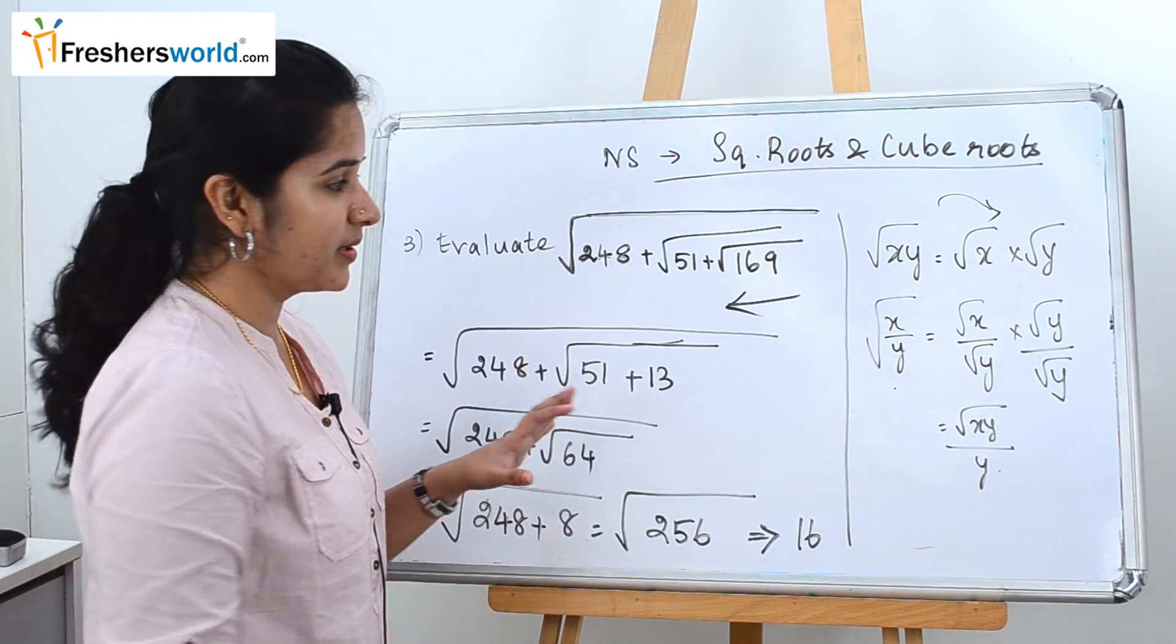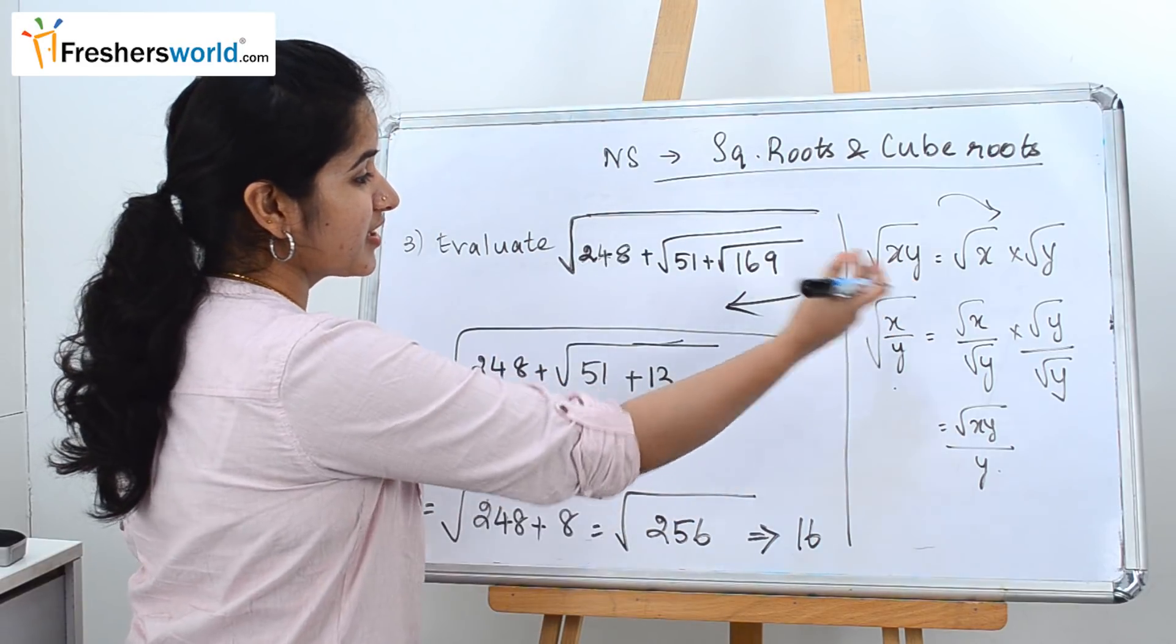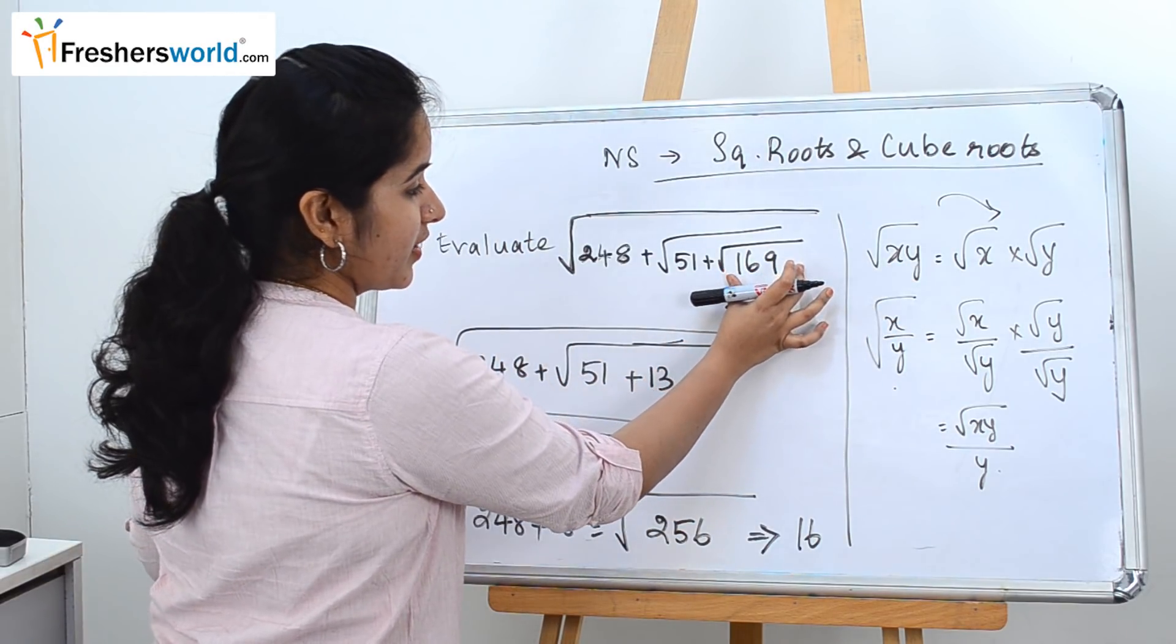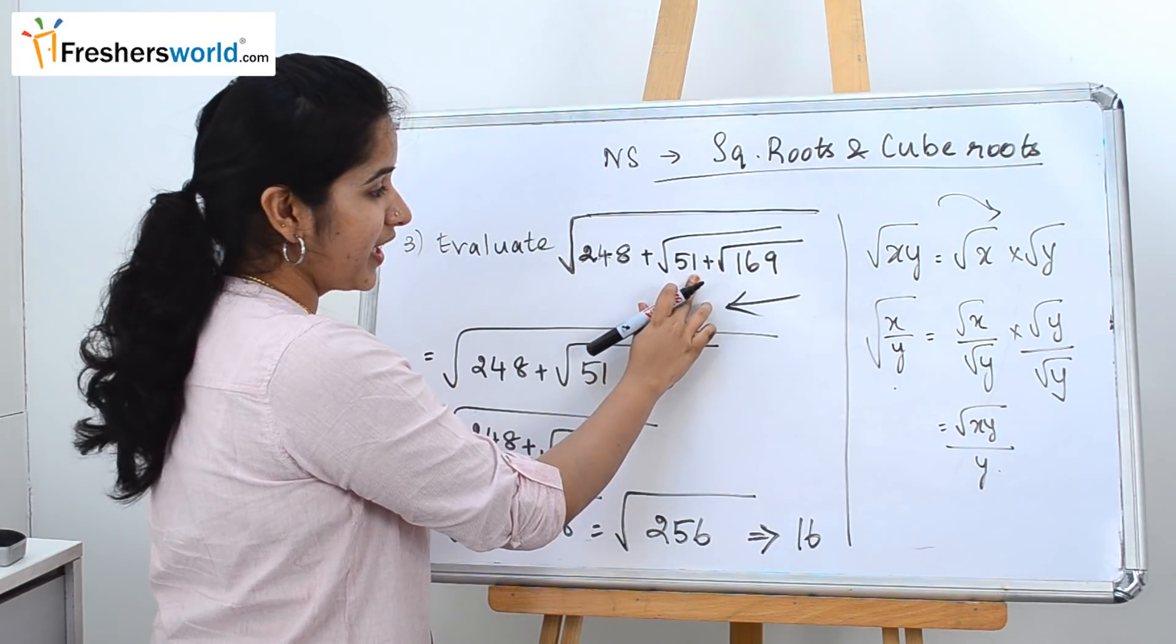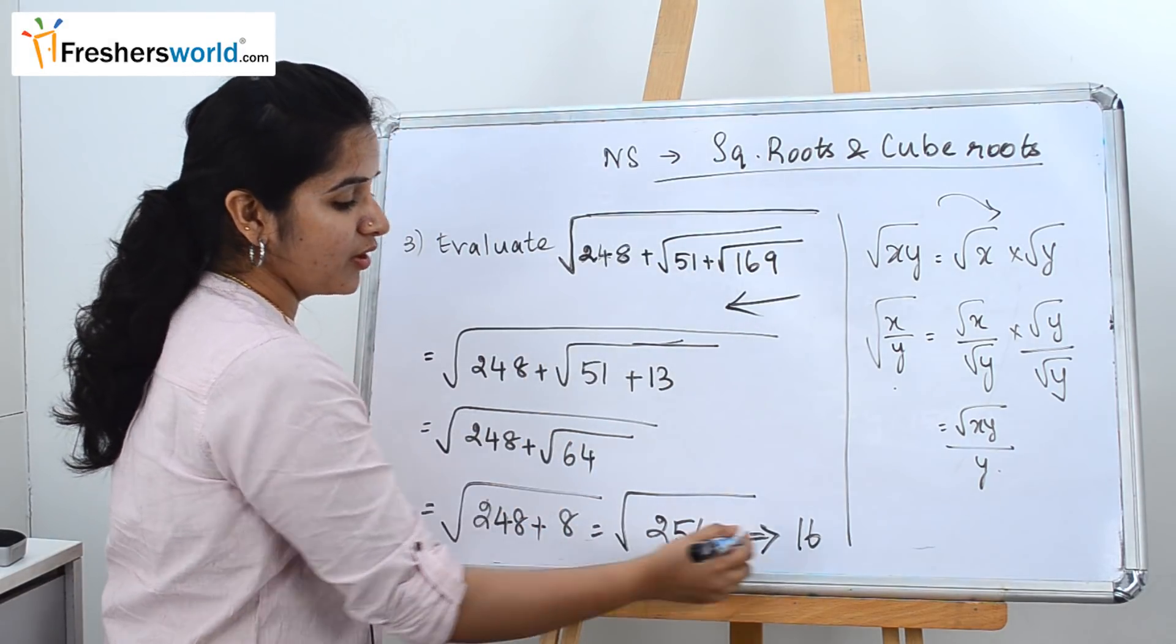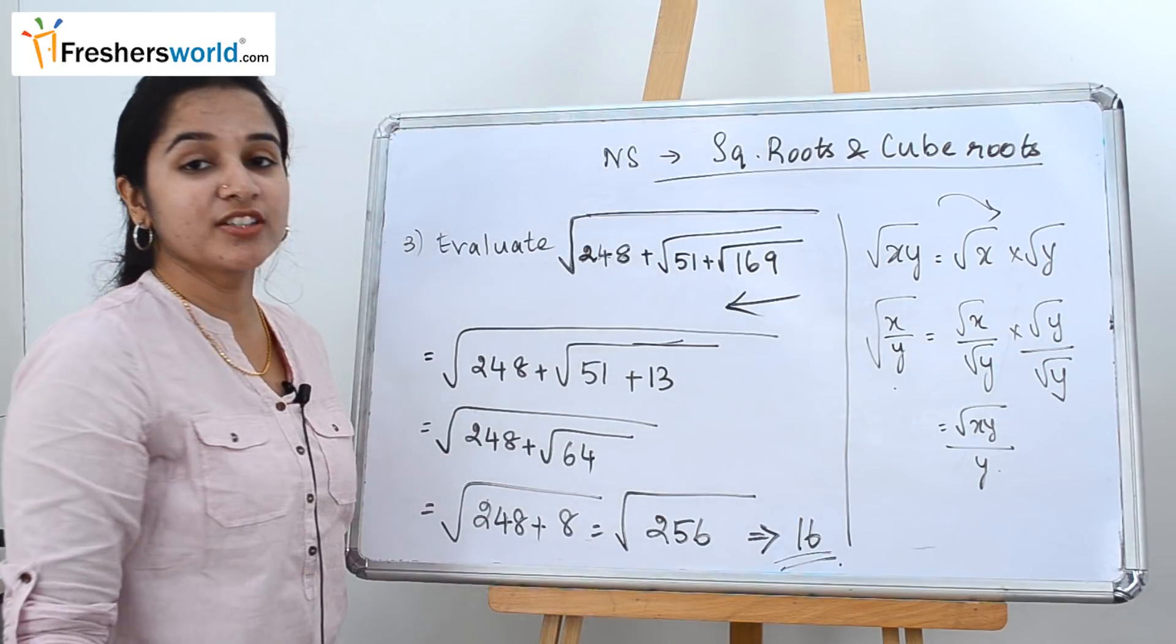So how did we solve it? It's a very simple sum. The only trick that you should know is you have to start it from the right-hand side. So solve this 169, then add it along with the next number, form a square root of that. Then you add it with the next number, solve it, you will get the final answer. So let's go to the next sum.